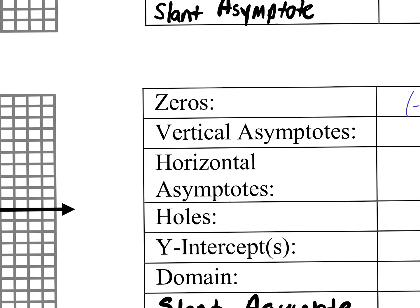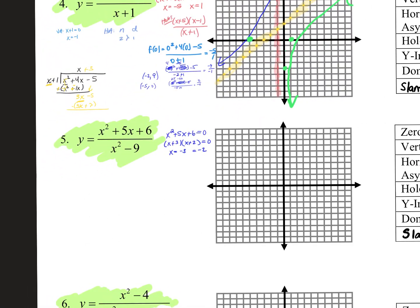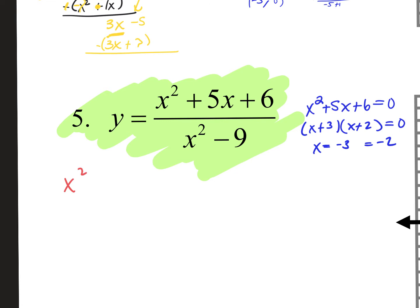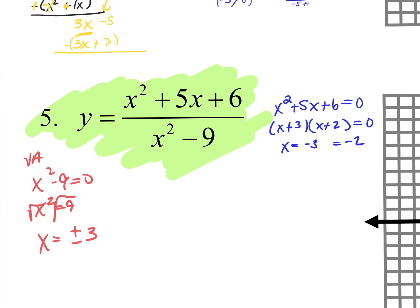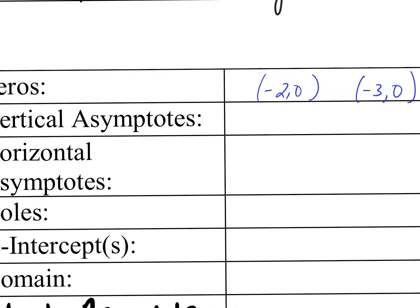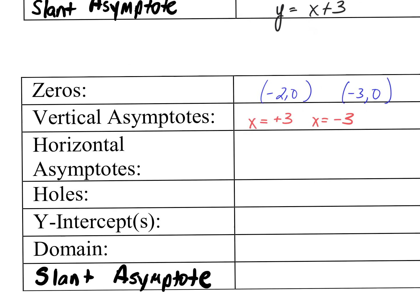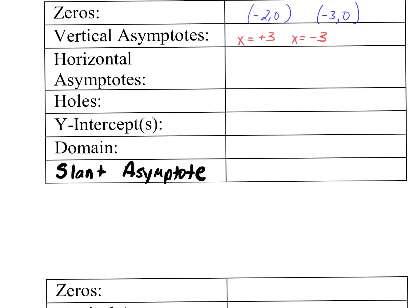Now let's find our vertical asymptotes. Set the denominator equal to zero: x squared minus 9 equals zero. X squared equals 9, so x equals plus or minus 3. Vertical asymptotes at x equals positive 3 and x equals negative 3. And the domain? Negative infinity to negative 3, union negative 3 to 3, union 3 to infinity. Good job.